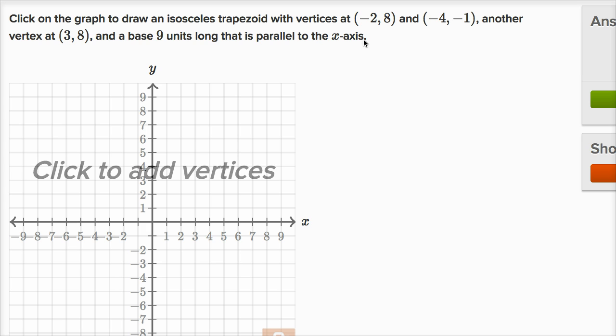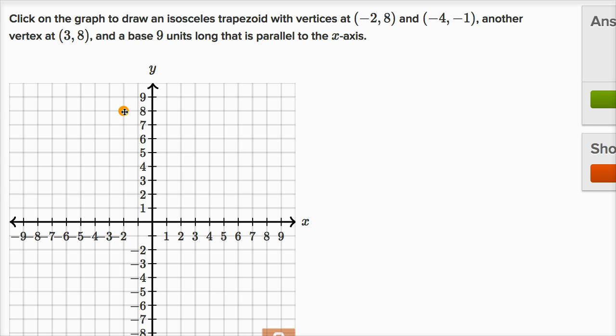All right, let's see if we can do this. So we could just start plotting these vertices. So negative two comma eight, x is negative two, y is eight, that's that point right over there.